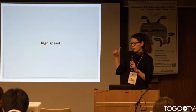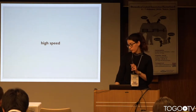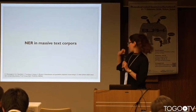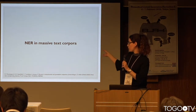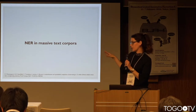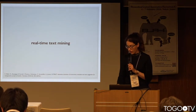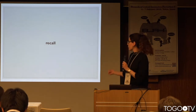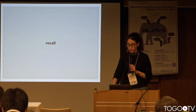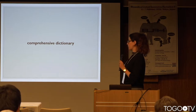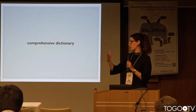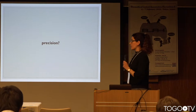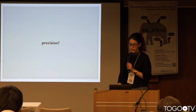We have high speed, but what else do we need for a good system? This can be used for named entity recognition in massive text corpora, but it is also used in real-time text mining. Apart from speed, we need good recall, and in order to get good recall we need comprehensive dictionaries for each entity we are trying to recognize. We also need good precision — but how do we get that?